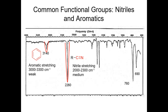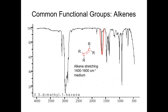In IR you're looking for two things: the location, because every functional group has a range, and the intensity — whether it's medium, weak, broad, or strong. These together tell you if it's a nitrile, aromatic, or alkyl group. The alkene stretch is between 1400 and 1600, but it's a medium stretch that can easily overlap with other stretches, which is another reason you can't use infrared alone.